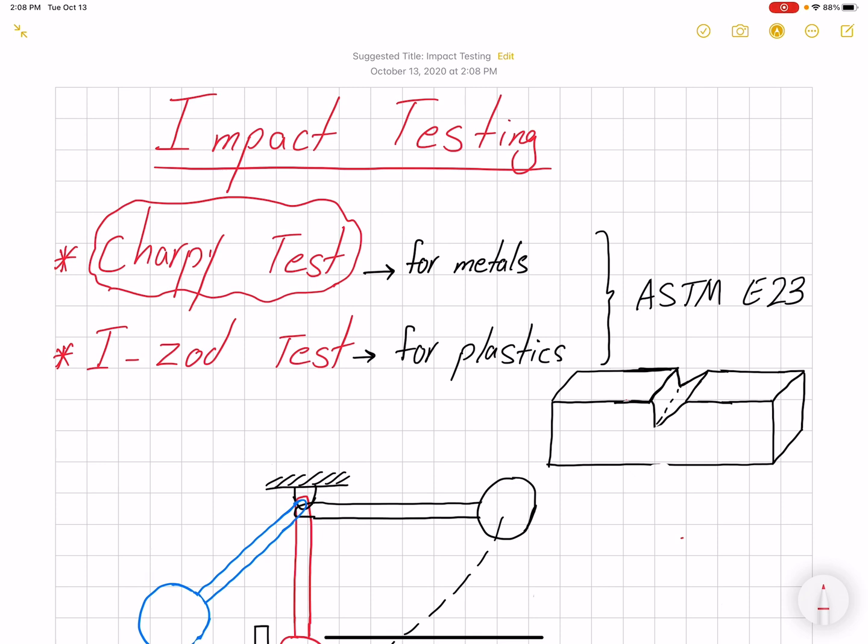I've seen these two tests used interchangeably for different materials. ASTM E23 lists the procedure that you need to follow to perform impact testing and also gives information on the dimensions of our specimen.